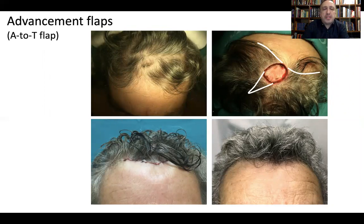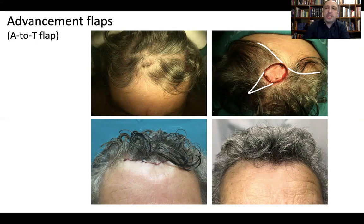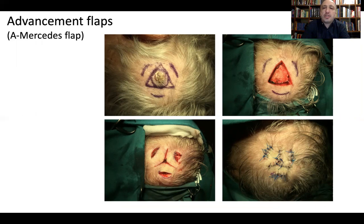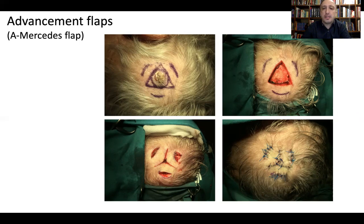For advancement flaps, I think the A-to-T flap is the best one to apply to the scalp, particularly in defects around the insertion hairline. In that case, we can place one side of the flap along the hairline in order to achieve an almost unnoticeable scar. Finally, the Mercedes flap consists of three advancement flaps sutured to one another. In the central part of the defect, we can complete movement by placing releasing incisions around the triangle to allow a larger advancement. This results in complete closure after undermining and releasing incisions.